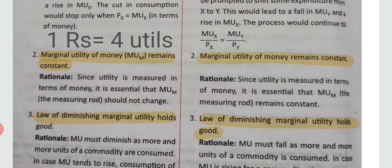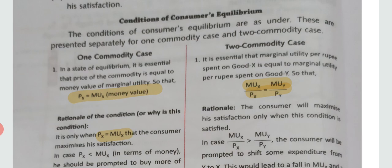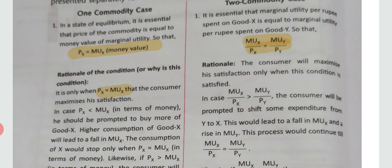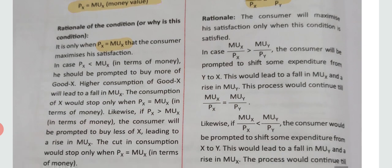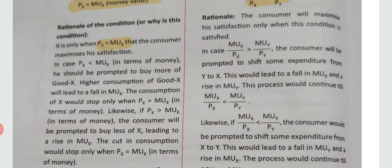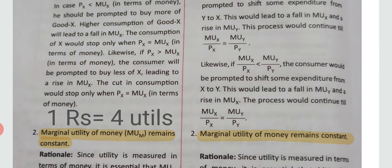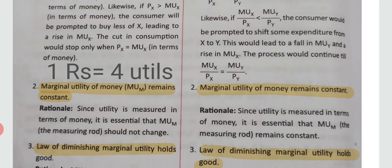For the case of two commodities, the first condition is that the ratio of marginal utility to price of commodity X should equal the ratio of marginal utility to price of commodity Y. If MU of X is greater than Y, the consumer buys more X; if MU of Y is greater, the consumer buys more Y. Equilibrium is only attained when MU-to-price ratios are equal for both commodities.